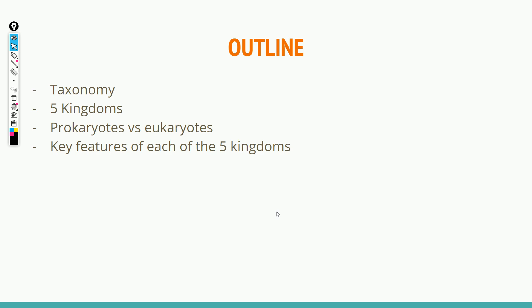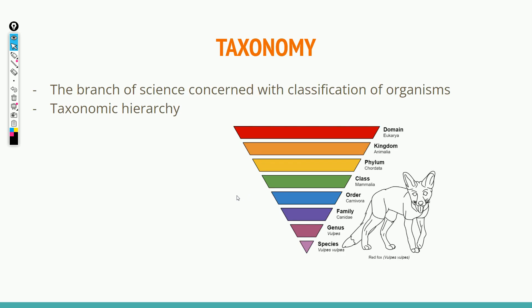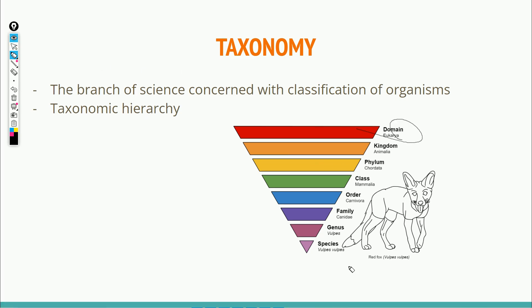In a nutshell, taxonomy is the branch of science concerned with classifying organisms. The way we do that is using a taxonomic hierarchy, going from the most broad — which is the domain — all the way down to the most specific, which is the species. You don't actually need to know much of these, but the kingdom, the genus, and the species are probably the most relevant for you to know.